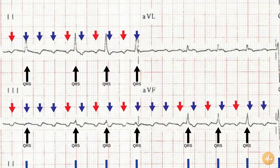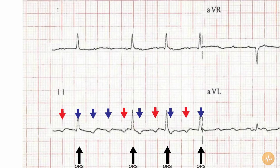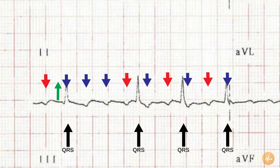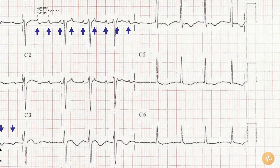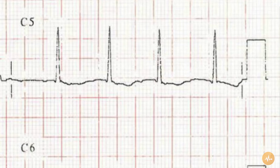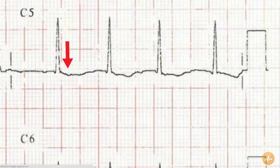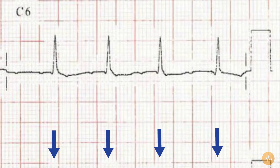The axis is normal with an upwards complex in lead 1 and 2. The QRS duration is normal at less than 3 small squares. There is sagging of the ST segment in leads V5 and V6.